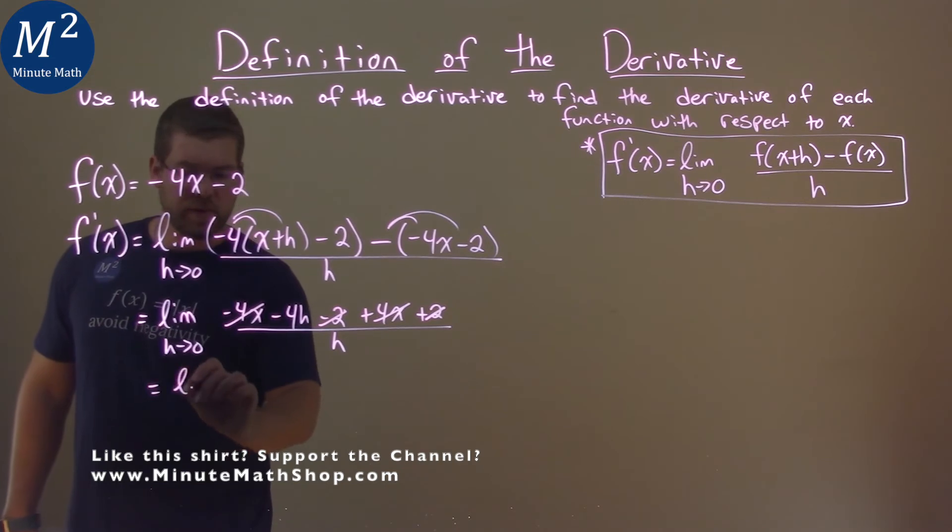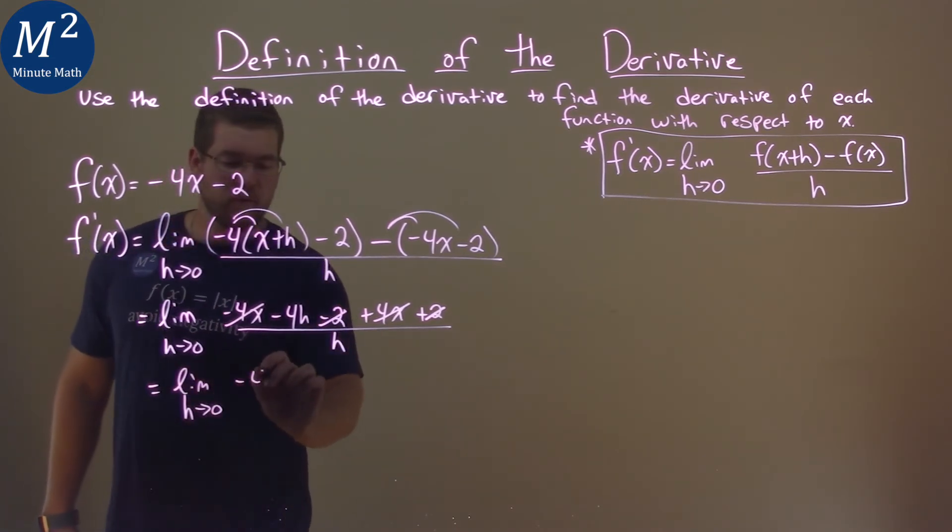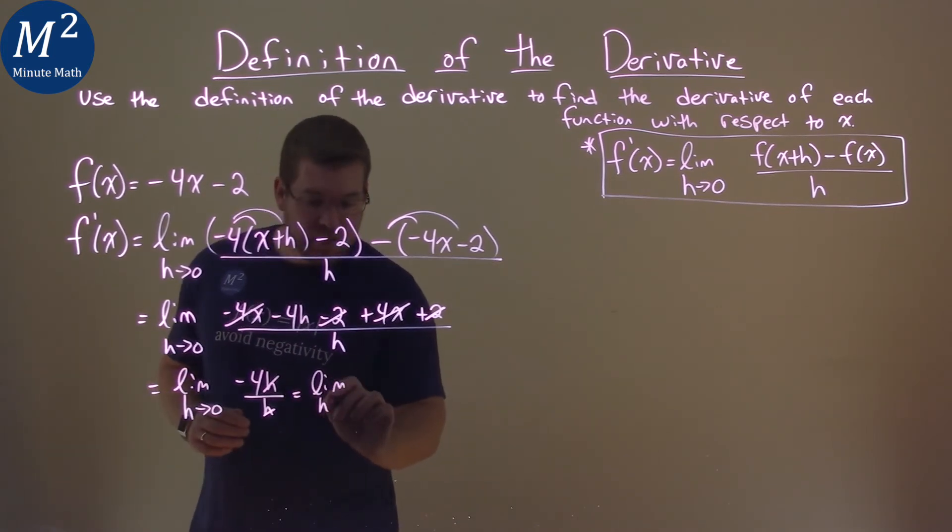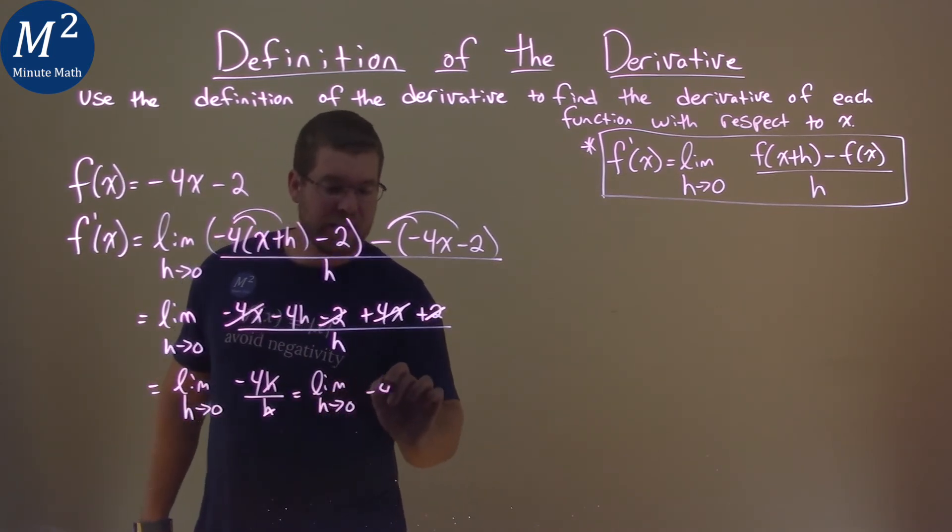We're left with the limit as h approaches 0 of negative 4h over h right here. Well, the h is canceled as well. So we're left with a limit as h approaches 0 of negative 4.